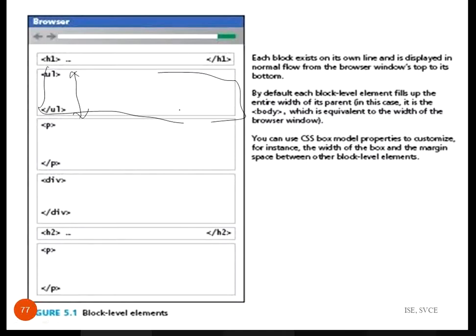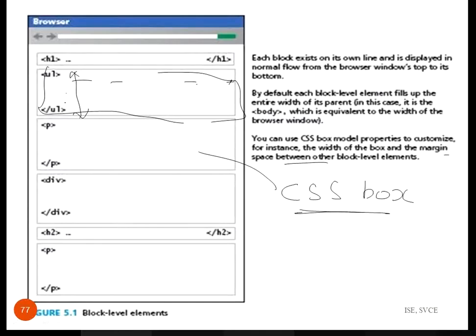By default, each block level element fills up the entire width of its parent — which is the body, equivalent to the width of the browser window. The content will take the entire space, and only once it reaches the end of the line does it move to the next line. You can use CSS box model properties to customize width, margin, and spacing between block elements.